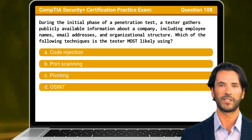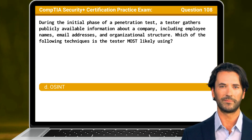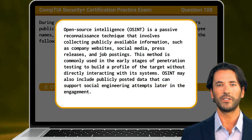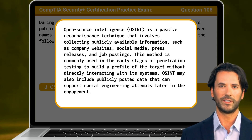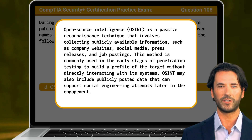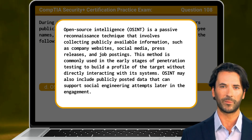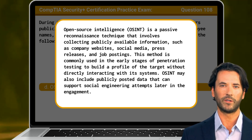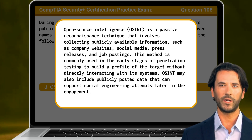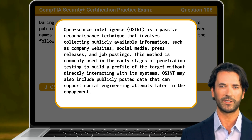The answer is D: OSINT. Open source intelligence, also known as OSINT, is a passive reconnaissance technique that involves collecting publicly available information, such as company websites, social media, press releases, and job postings. This method is commonly used in the early stages of penetration testing to build a profile of the target without directly interacting with its systems. OSINT may also include publicly posted data that can support social engineering attempts later in the engagement.